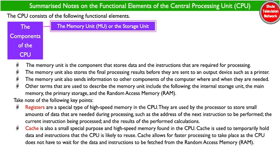Cache is also a small, special-purpose, high-speed memory found in the CPU. Cache is used to temporarily hold data and instructions that the CPU is likely to reuse. Cache allows for faster processing to take place, because the CPU does not have to wait for the data and instructions to be fetched from the random access memory.